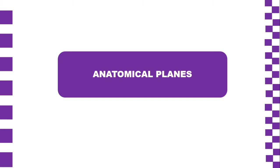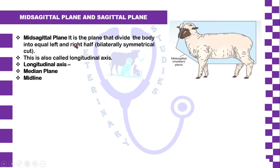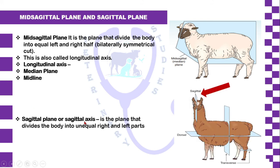Now, anatomical planes. The mid-sagittal plane is a plane by which we can split or divide an animal into two equal left and right halves. It is also called the longitudinal axis, median plane, or midline. The sagittal plane or sagittal axis, on the other hand, is a plane by which we can split an animal into unequal left and right parts.